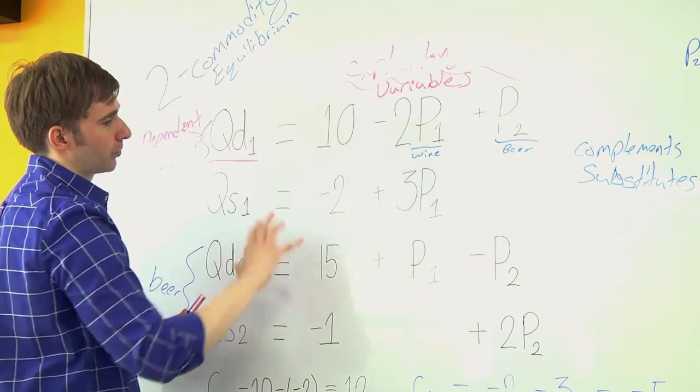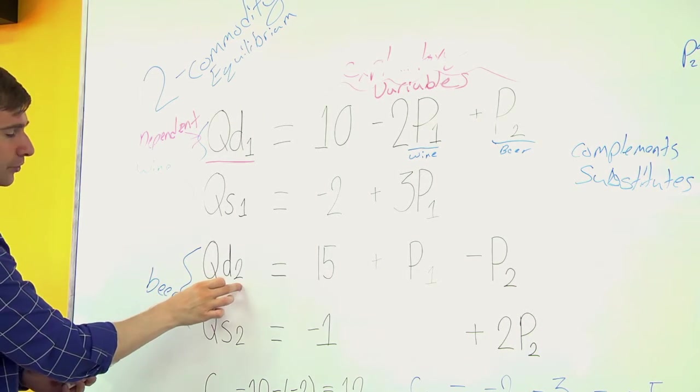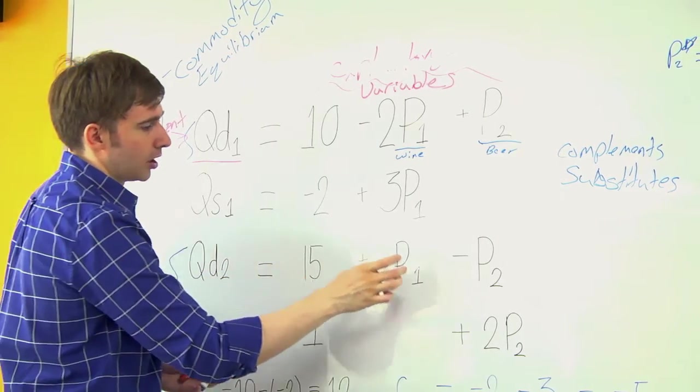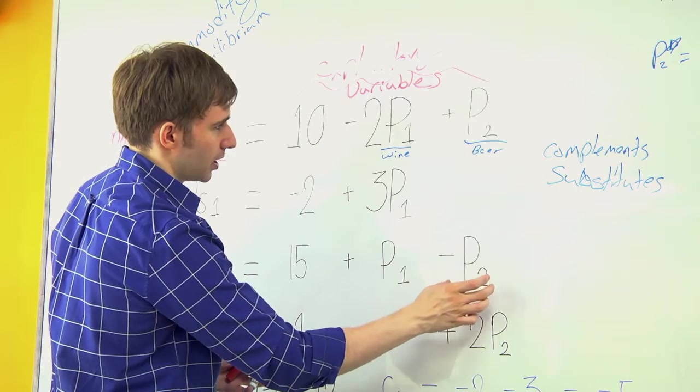And so we're dealing with substitutes. And the same thing works for beer. The quantity demand for beer depends upon the price of beer and wine.